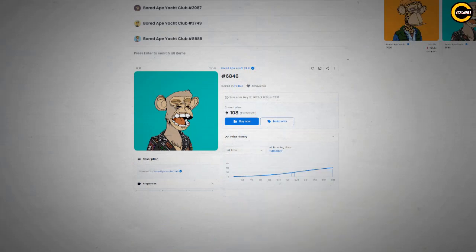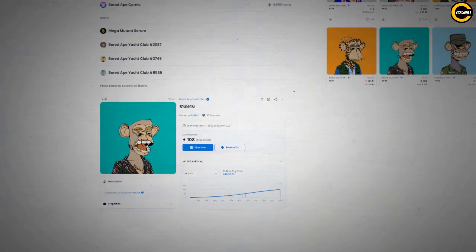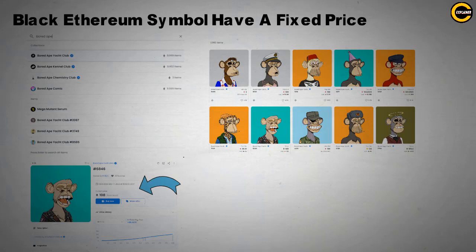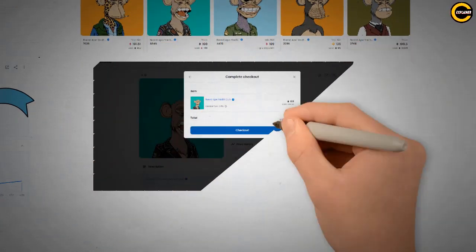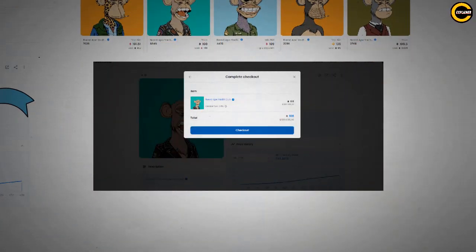If you are feeling generous and have the 108 ETH to buy Bored Ape 6846, click on the ape and see the NFT price history and an option to buy.